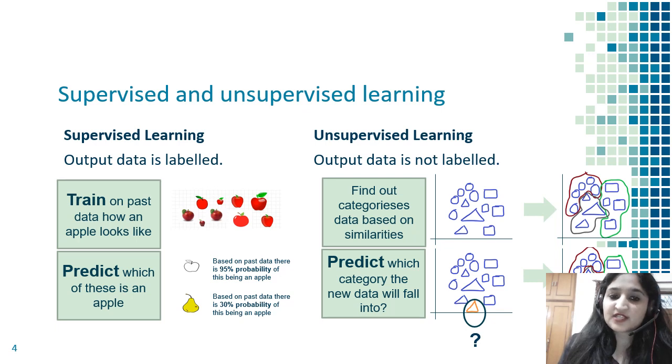Then I show it a picture of a pear, and the machine says there's only 30 percent probability this fruit is an apple. So this is supervised learning.